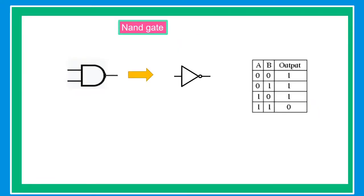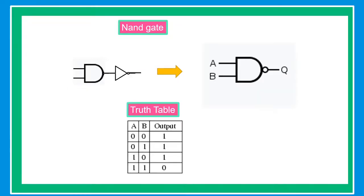Our next topic is the NAND gate. The NAND gate is an AND gate followed by a NOT gate, and this is the basic construction of the NAND gate. The truth table of the NAND gate: when A and B are both zero, the output is one. When A is zero and B is one, the output is one. When A is one and B is zero, the output is one. And when both A and B are one, the output is zero.